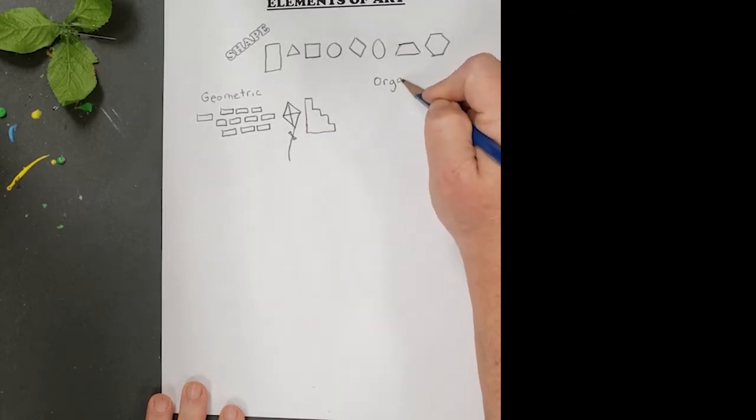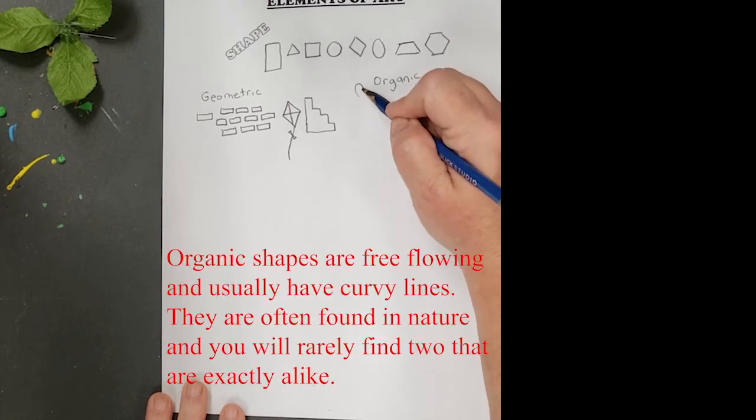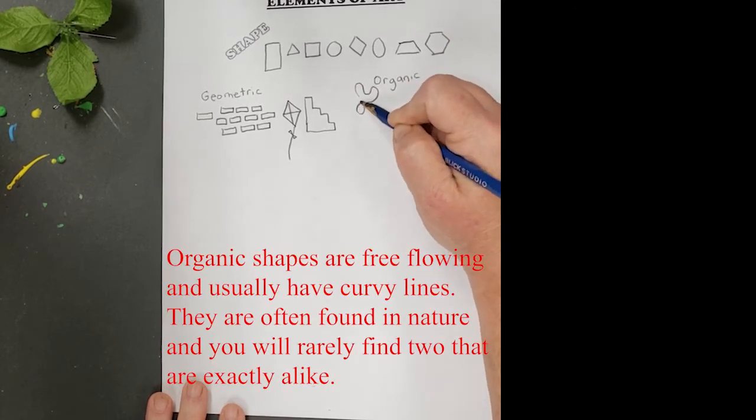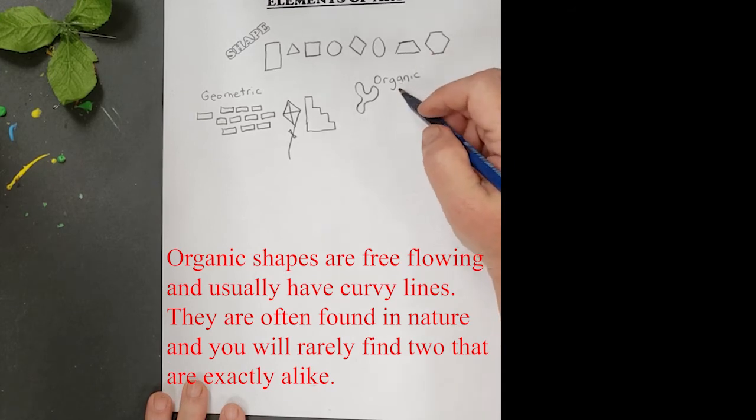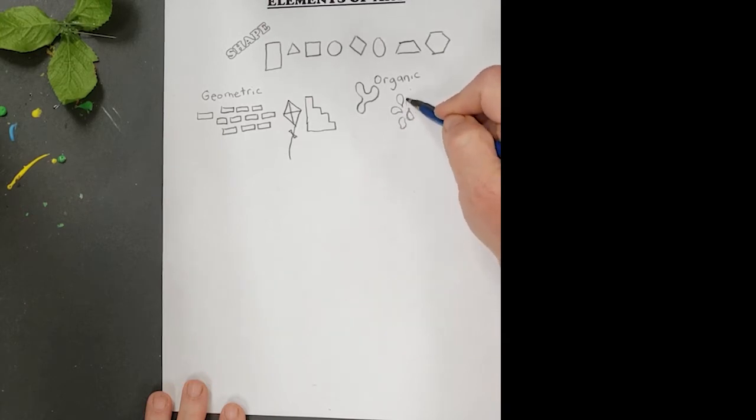The other type of shape, other than geometric, is organic shapes. Organic shapes are often used by artists as well, and they are found in nature and usually have kind of curvy lines. They're found in nature and things like